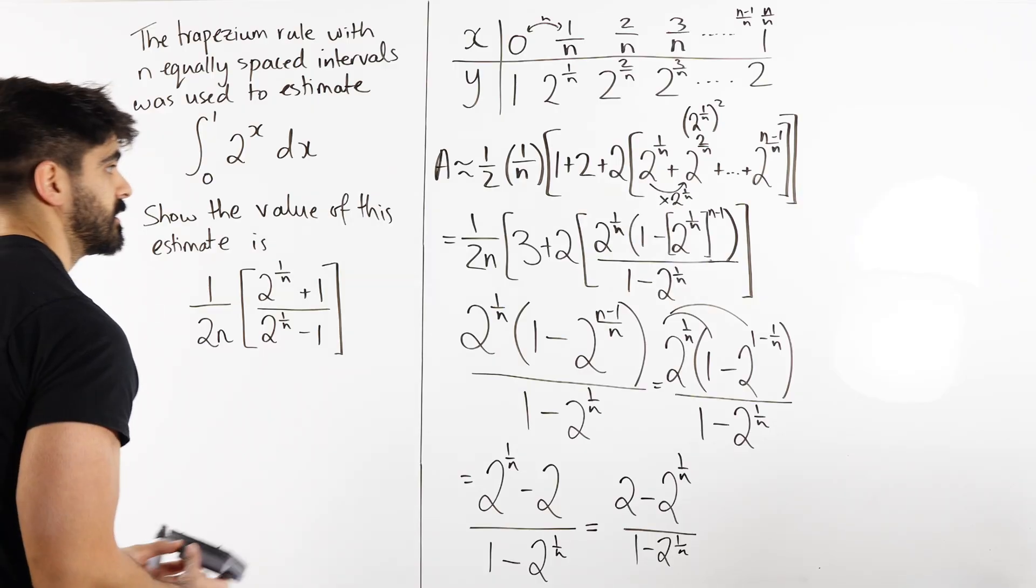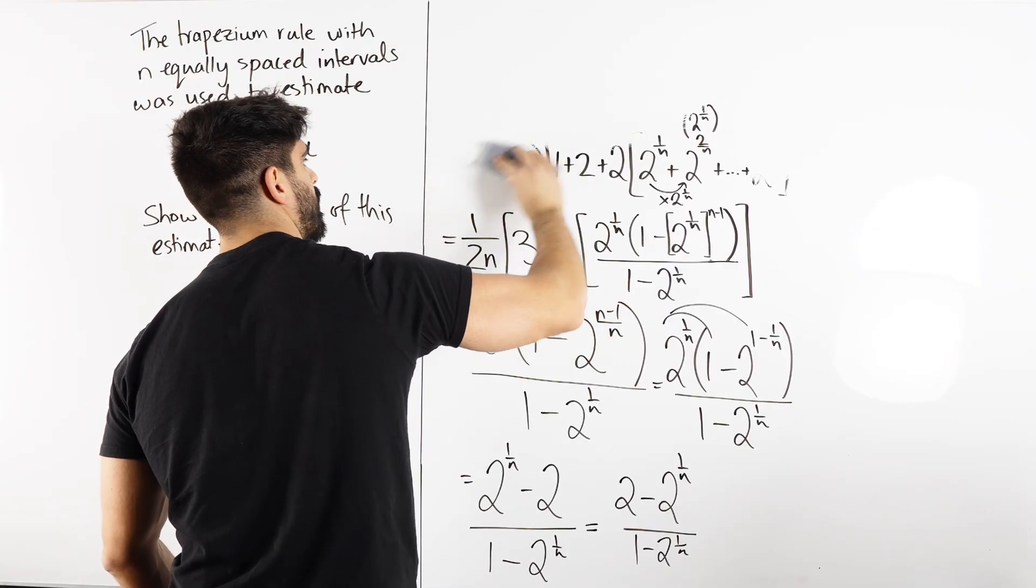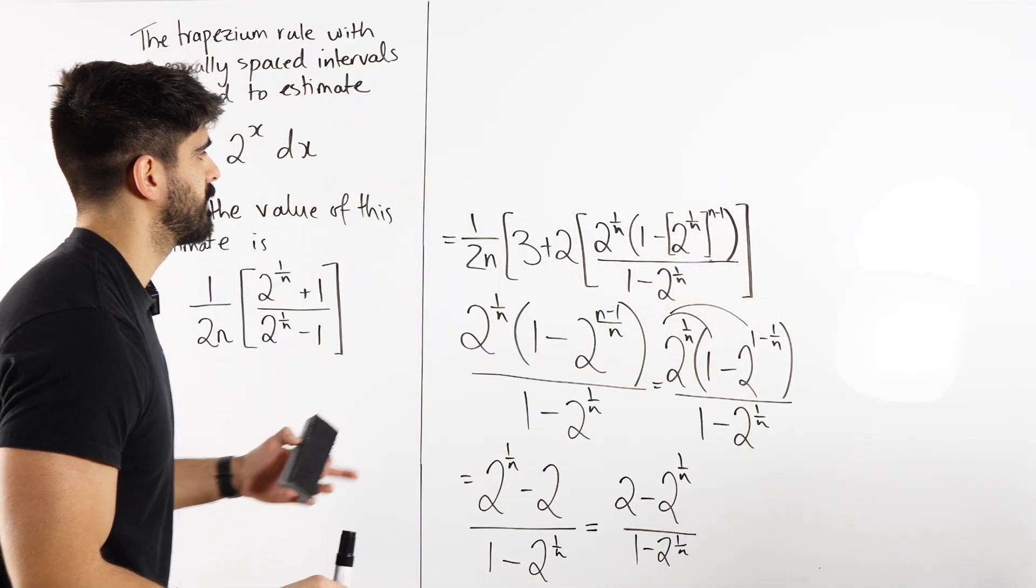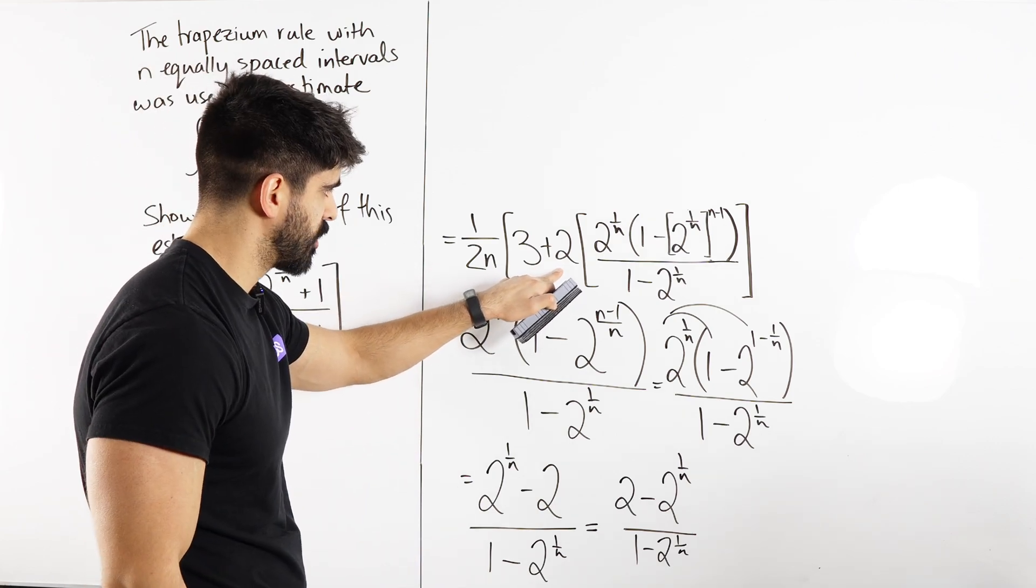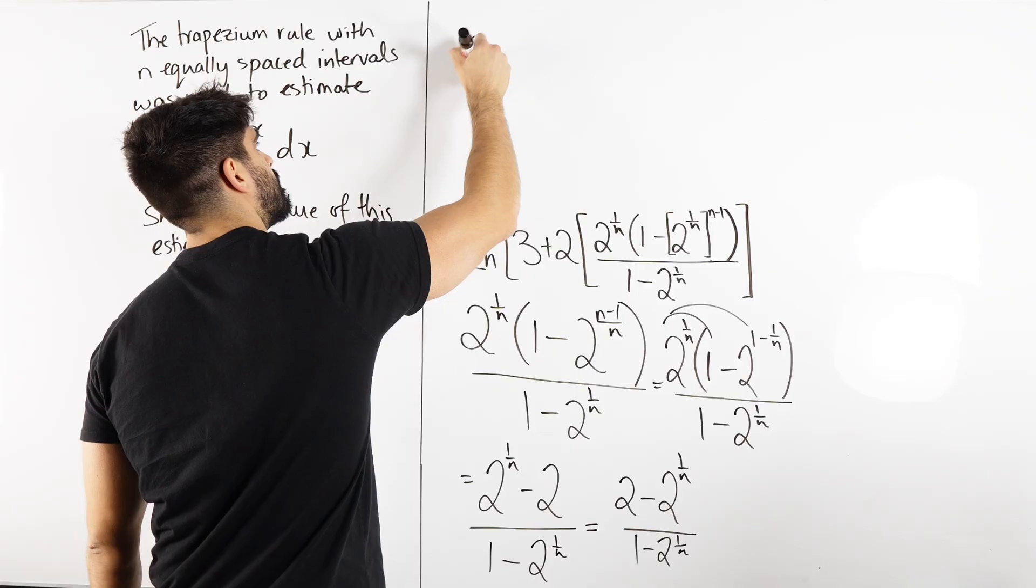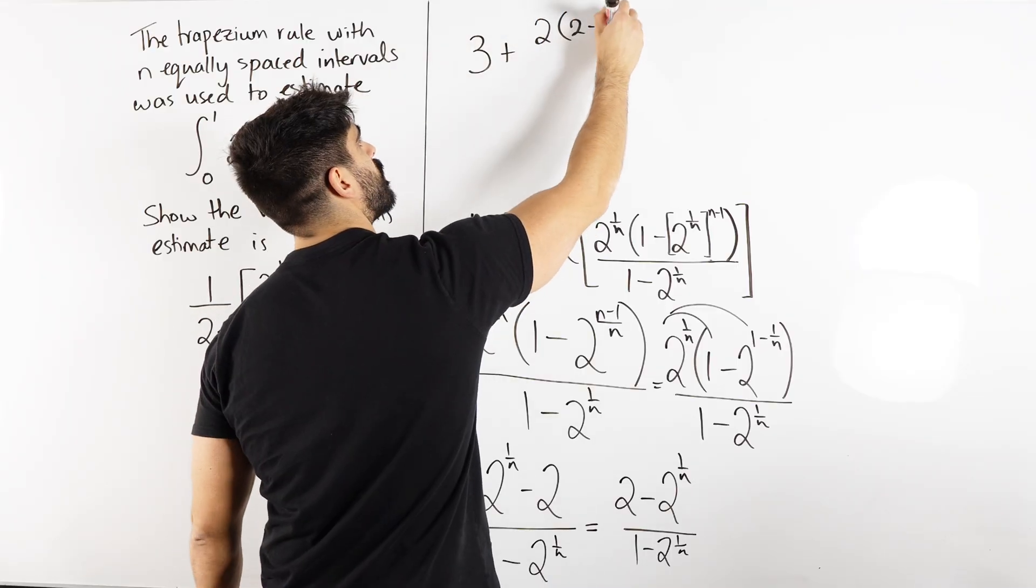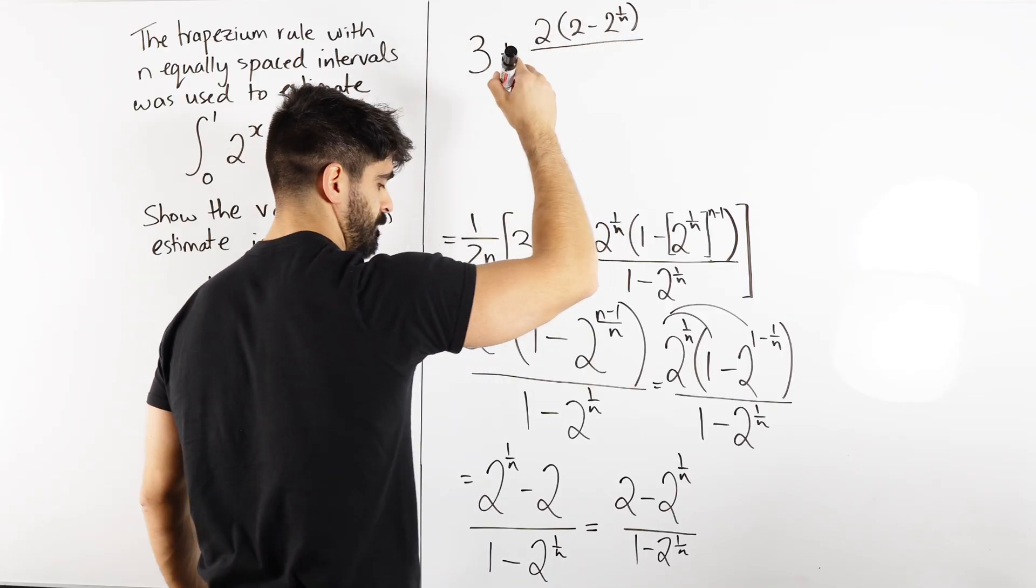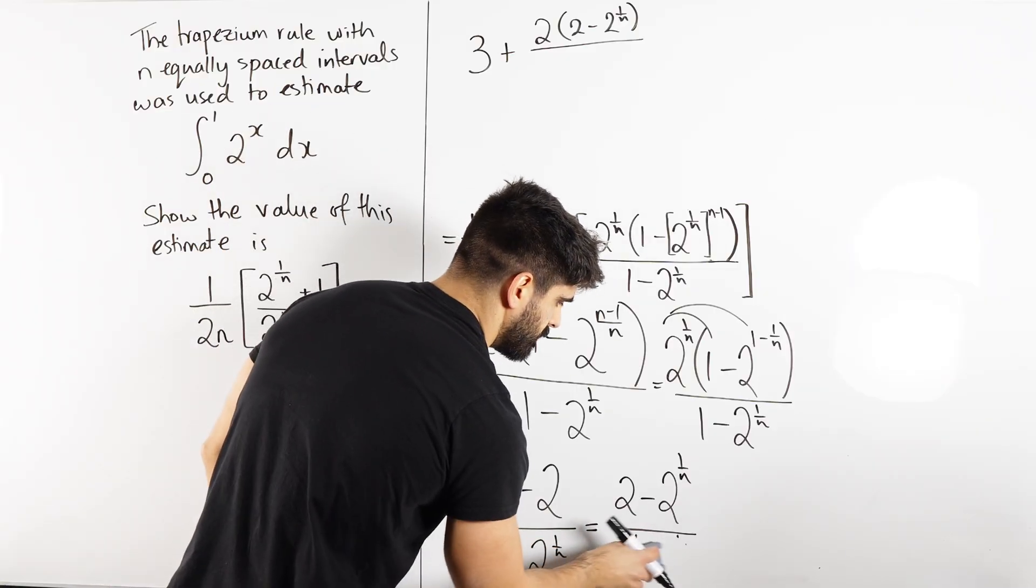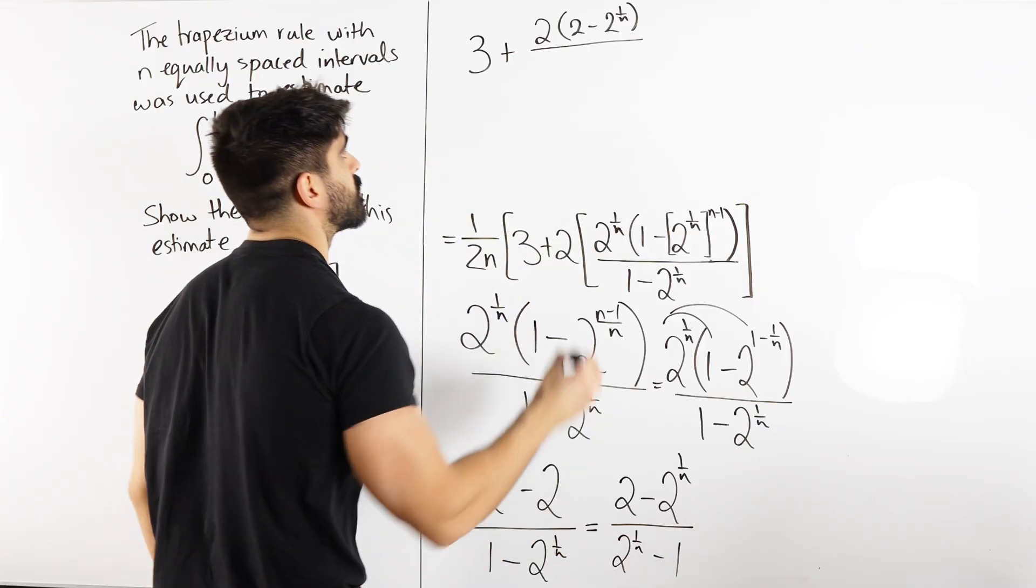So we're left with 1 over 2n, so should we multiply by 2 now? The thing is, if we multiply by 2, how helpful is that? And then we have this 3, so forget about the 1 over 2n for a second. We have 3 plus 2 lots of all of that, 2 minus 2 to the 1 over n, all over. Wait, I didn't even swap this around, did I? I swapped that, but I didn't swap the bottom one. This guy is bugging. 2 to the power of 1 over n minus 1.